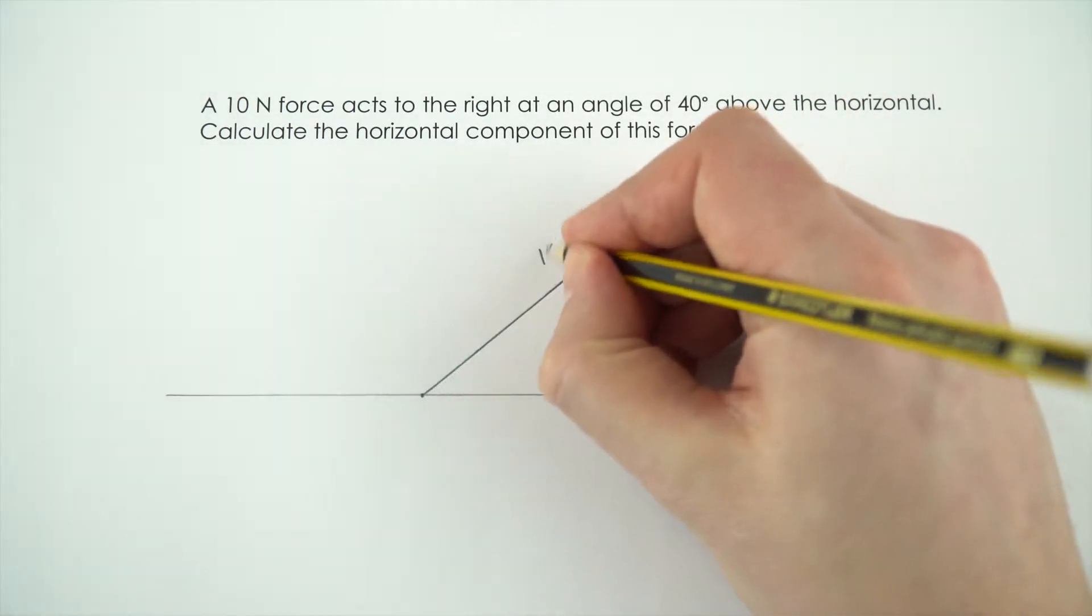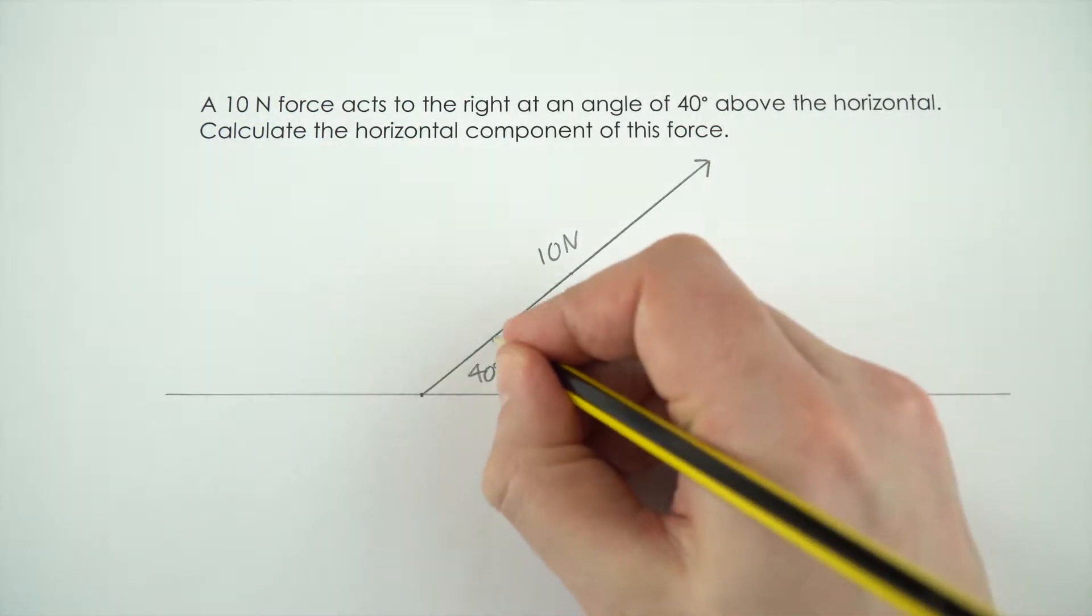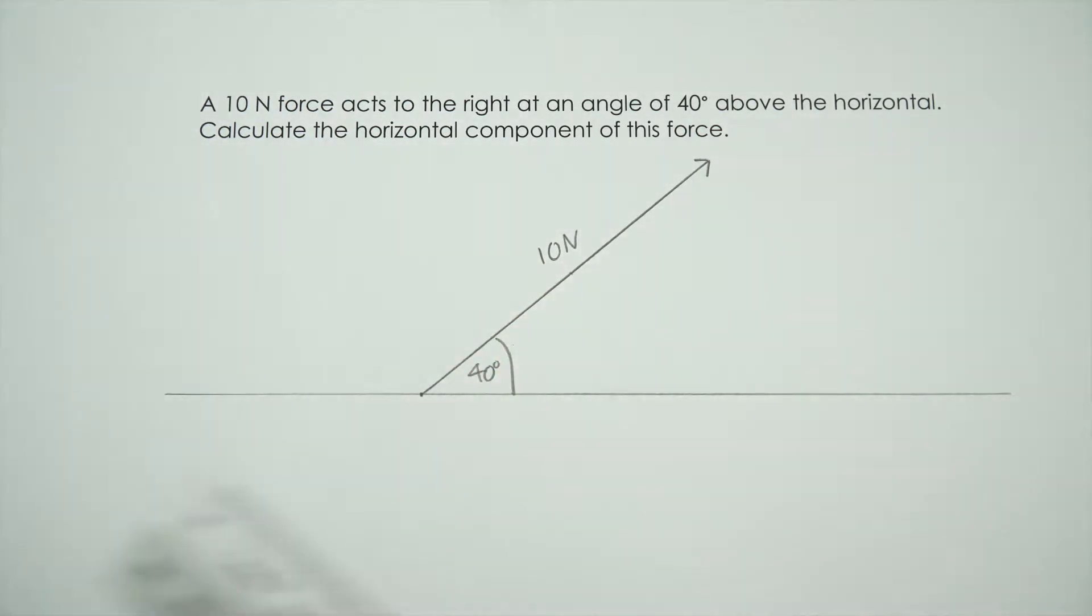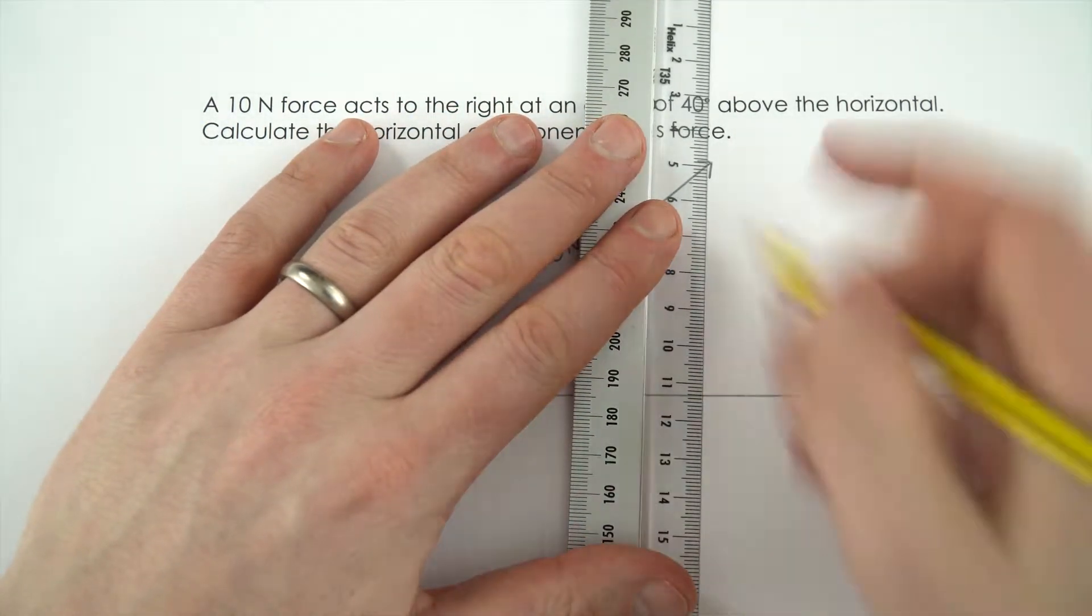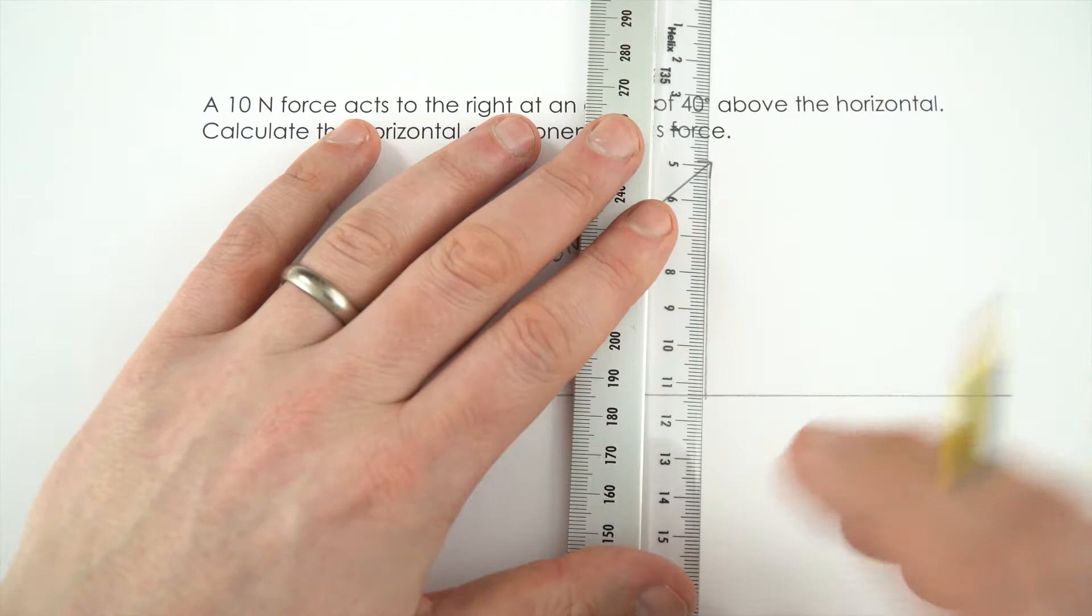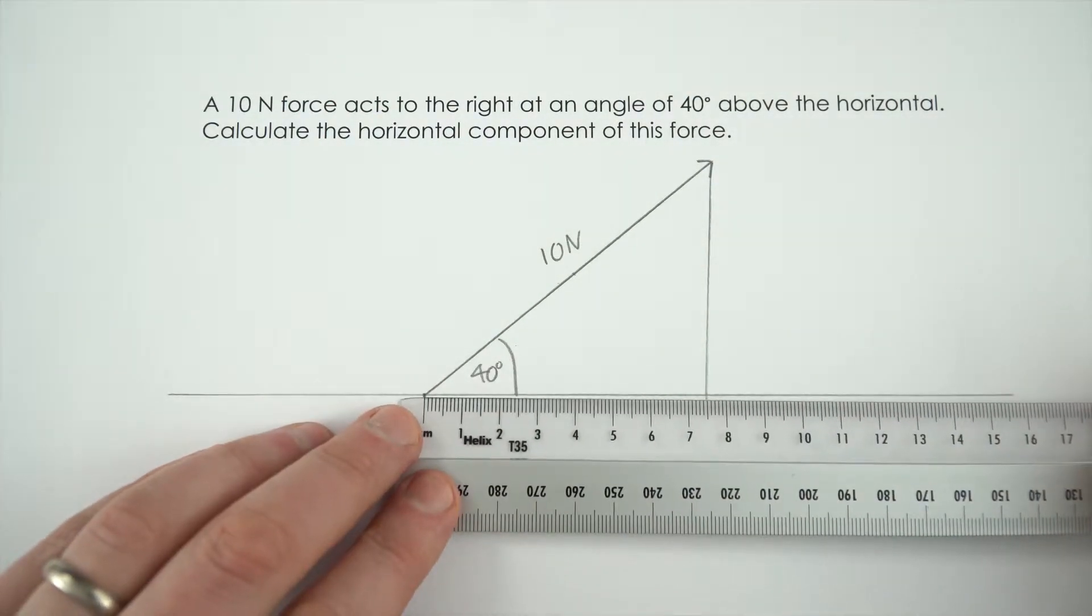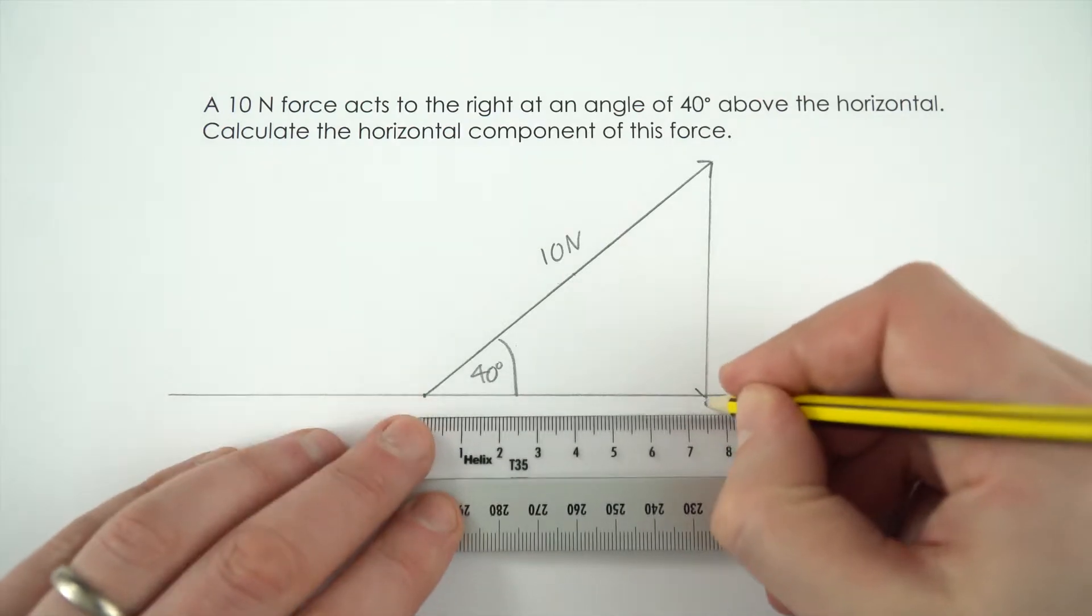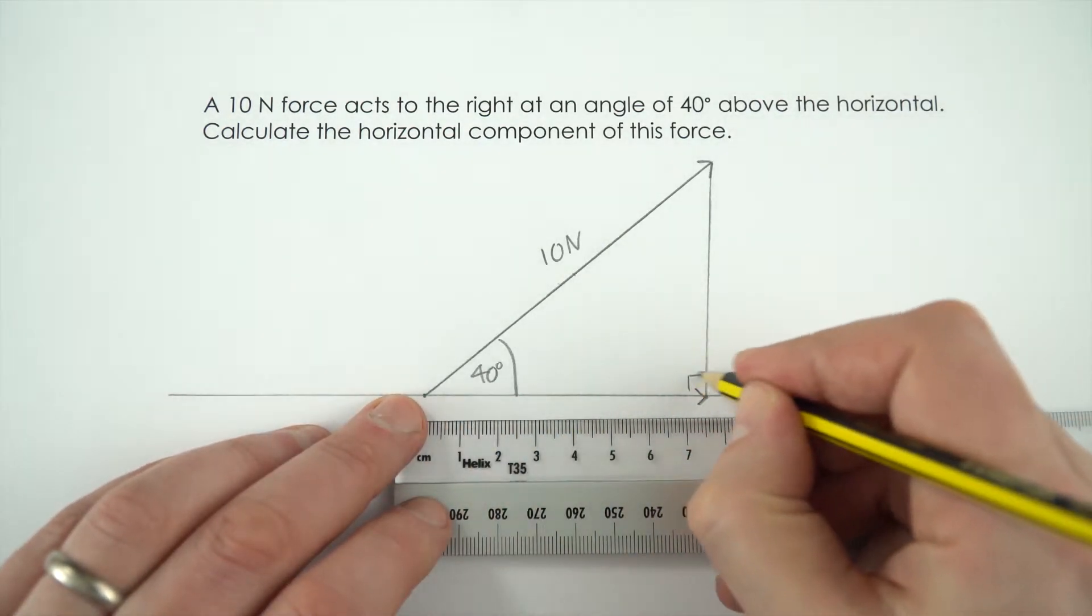So this is our 10 Newton force at an angle of 40 degrees above the horizontal and we want to know the horizontal component. If I just draw this line down, this is a really useful thing, always draw a diagram when it comes to questions. We want to know effectively how long this side along here is. This is the horizontal component of that force and it's a right angle triangle.